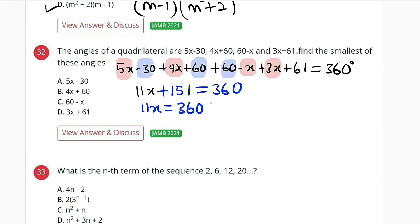11x will be equal to 360 minus 151. 11x is equal to 209.